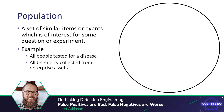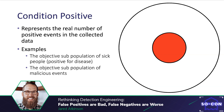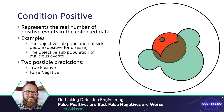The red circle represents the objective state of positive elements — the objective subpopulation of sick people or the objective subpopulation of malicious events. If we overlay our classification rule onto condition positive, we see that there are cases where the rule correctly predicts the positive classification and cases where it incorrectly predicts it. This is representative of the two possible condition positive results: true positive and false negative.